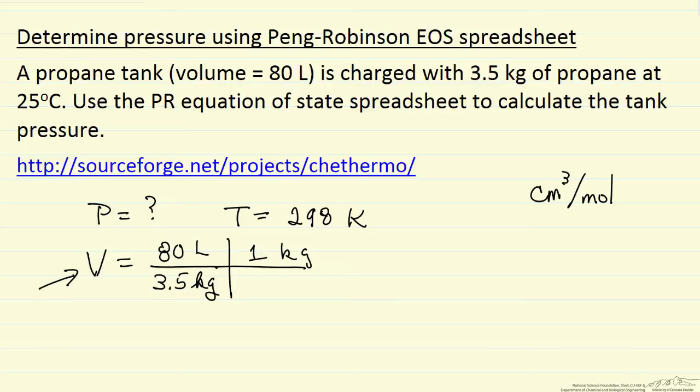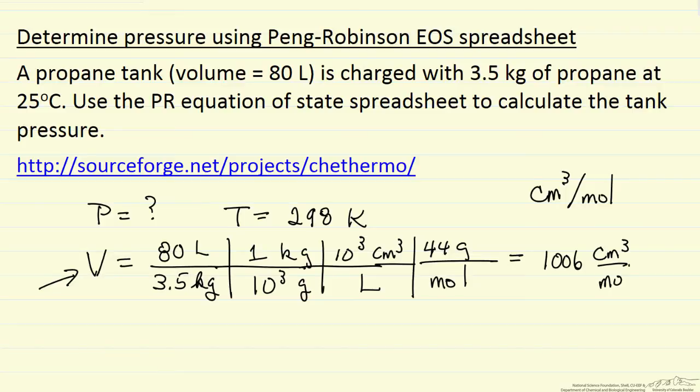That means 1 kilogram, 10³ grams, 10³ cubic centimeters per liter, and the molecular weight 44 grams per mole. If I do this calculation, I get 1006 cubic centimeters per mole. So I have temperature and volume, and I'm going to determine the pressure.